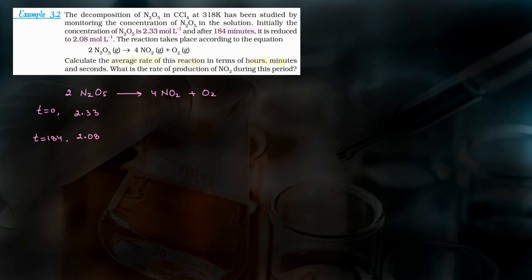What do you have to calculate? Calculate the average rate of this reaction in terms of hours, minutes and seconds — you have to find the average rate of reaction in three different units. And also: what is the rate of production of NO2 during this period?